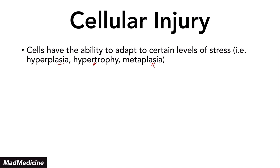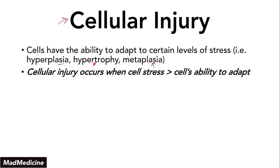What happens when the amount of stress exceeds our cells' ability to adapt? You are going to have cellular injury. Cell injury occurs when the amount of stress placed upon a cell is far exceeding the cell's ability to adapt — there's just too much stress on that cell.